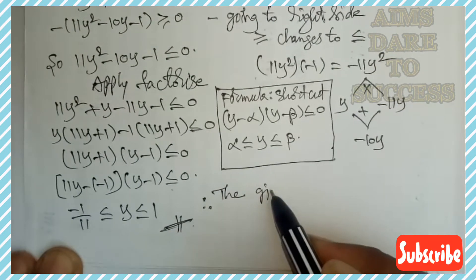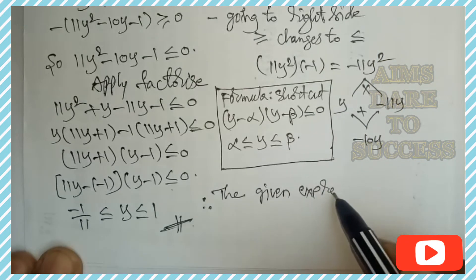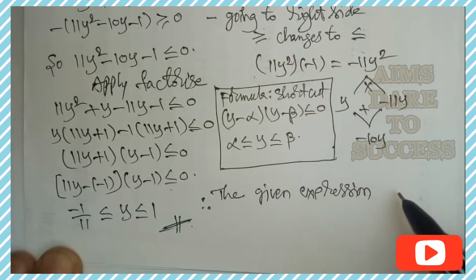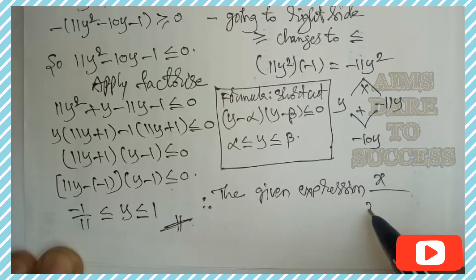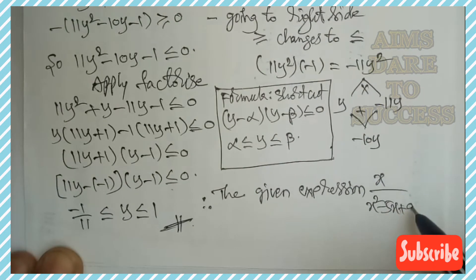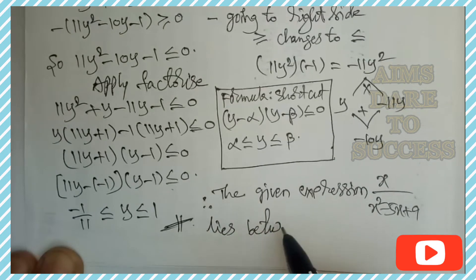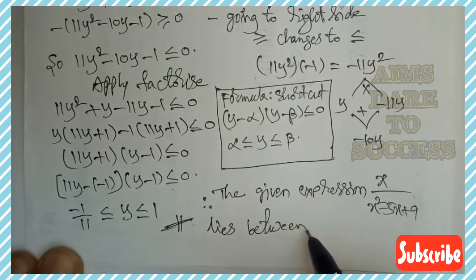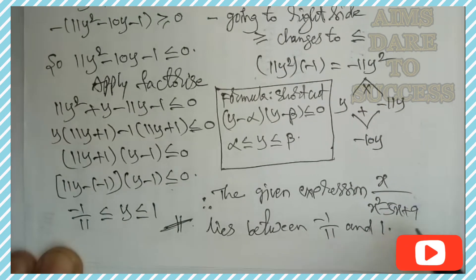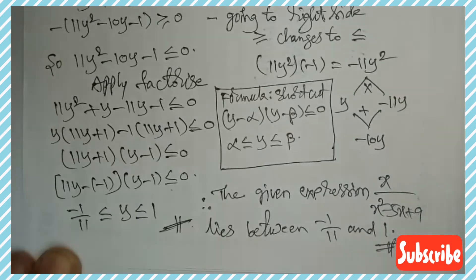So the given expression x / (x² − 5x + 9) lies between −1/11 and 1. This is the required answer. I hope you understand, my dear students.